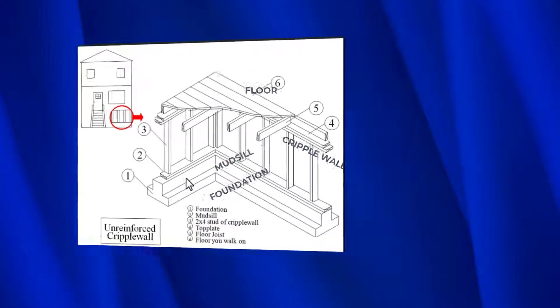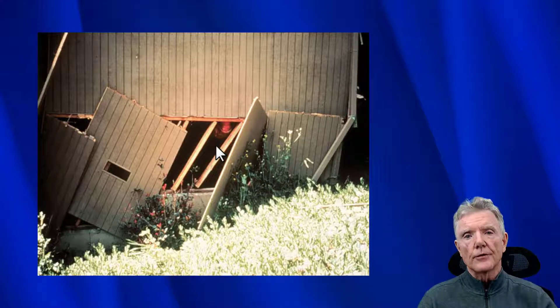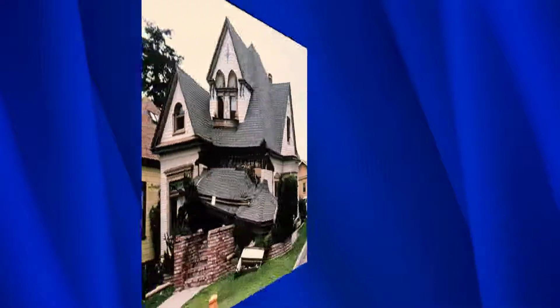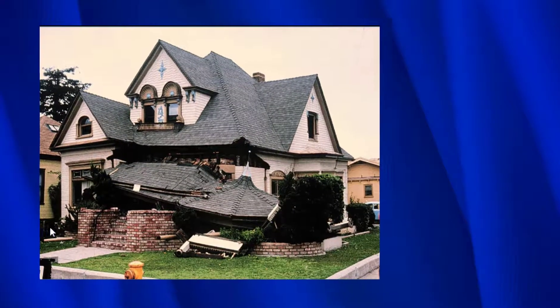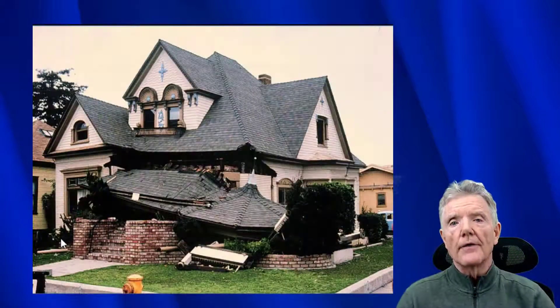If the cripple wall collapses, the house will fall off its foundation. Here's a good example of a cripple wall collapse — this is the cripple wall itself, here is the foundation, and this is the floor of the house. When it moved this way the cripple wall was just too weak. The purpose of a seismic retrofit is to make sure the cripple wall is strong enough that it does not collapse in an earthquake. Here you can see the floor of the house is now way down on the ground because the cripple wall has collapsed.